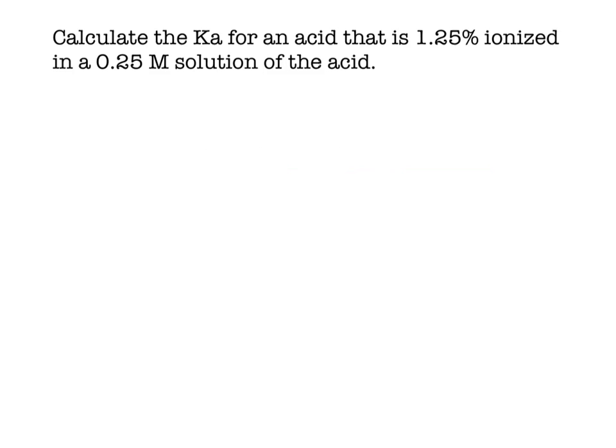So we're on the last one, number 17: calculate the Ka for an acid that is 1.25% ionized in a 0.25 molar solution of the acid.